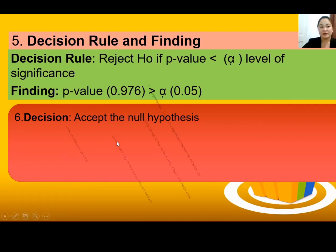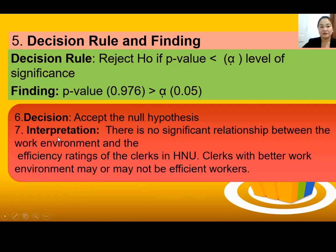Step 7 — Interpretation: Since we accept the null hypothesis, we restate it. Interpretation: There is no significant relationship between the work environment and the efficiency ratings of the clerks in HNU. Clerks with a better work environment may or may not be efficient workers.